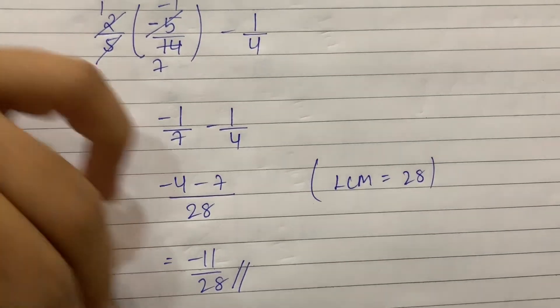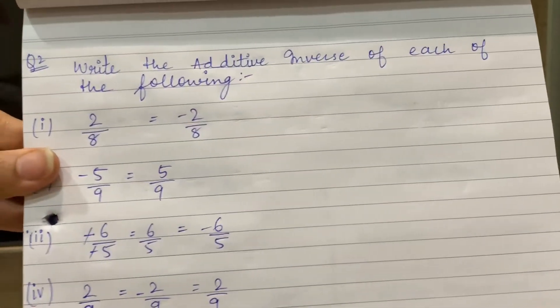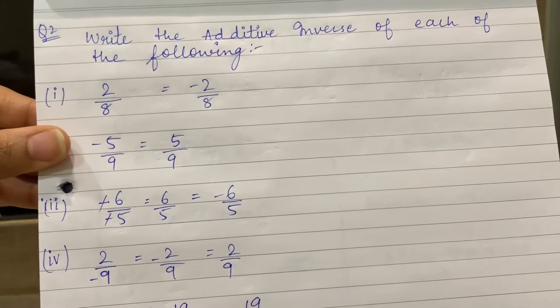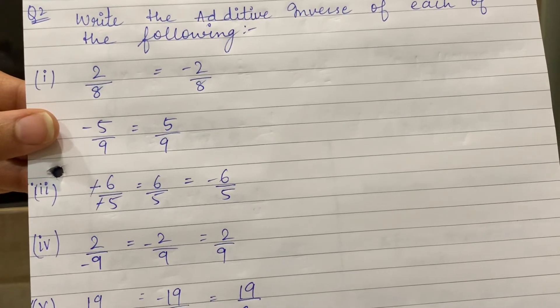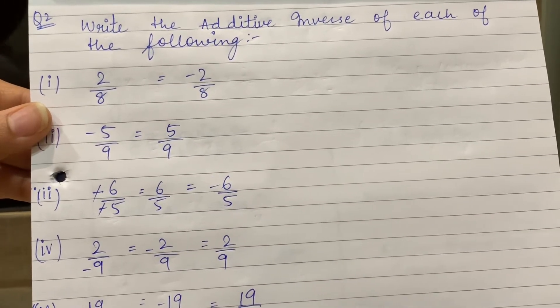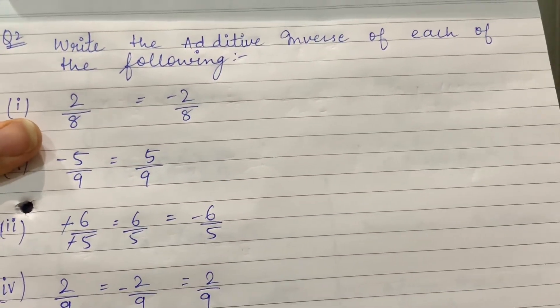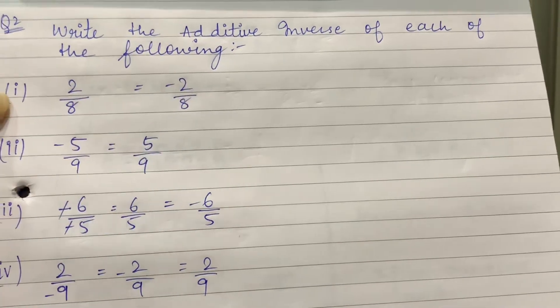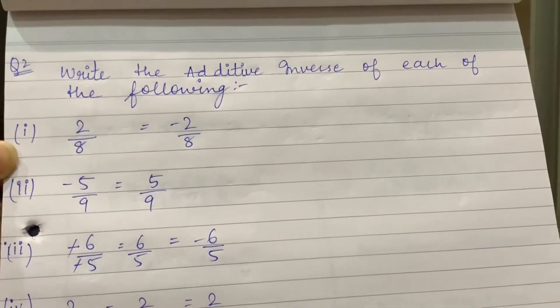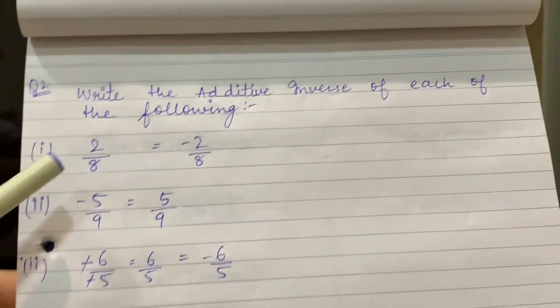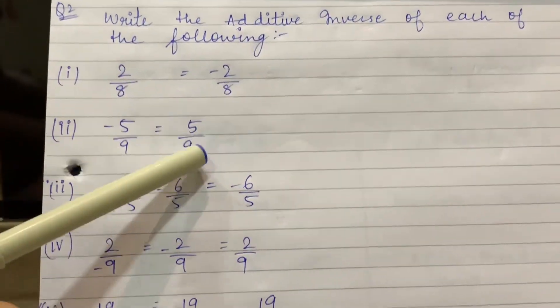Now switching to the next sum. Write the additive inverse of each of the following. We already read the theory for additive inverse — what it means is that what is plus will become minus, and what is minus will become plus. Very easy. 2 upon 8: the additive inverse will be minus 2 upon 8. The numerator and denominator do not flip because only additive inverse is asked, not multiplicative inverse. Minus 5 upon 9: the additive inverse will be 5 upon 9.